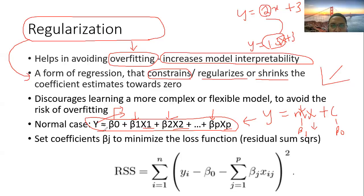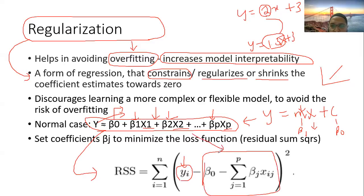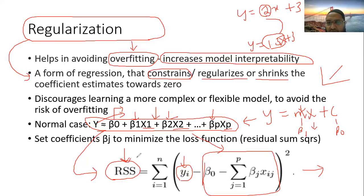It is more interpretable when we use the residual sum of squares. The RSS is calculated by subtracting the predicted value from the actual value, squaring the difference, and summing over all data points. That is the normal value we want to minimize in regression — the method minimizes the residual sum of squares. In regularization, we add an additional term to the RSS so that we have more control over the beta parameters.